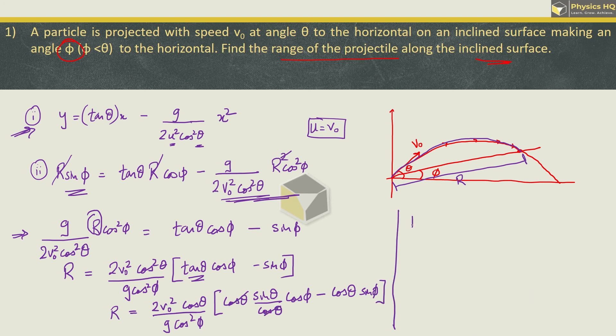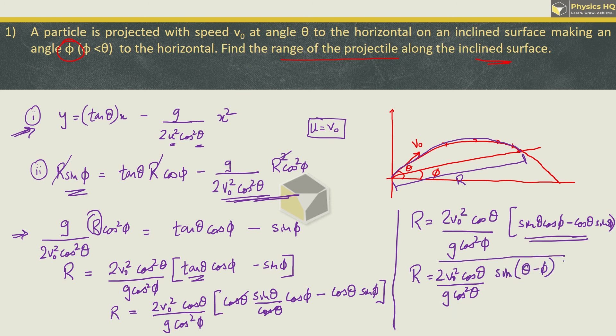And what we are left with is r is equal to 2 v0 square cos theta divided by g cos square phi. In bracket we have sin theta cos phi minus cos theta sin phi. This can be written as sin of theta minus phi. So this is the final equation of range that we get over here. Please try and remember this formula: sin a minus b is nothing but sin a cos b minus cos a sin b.